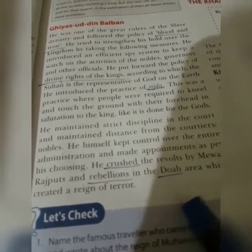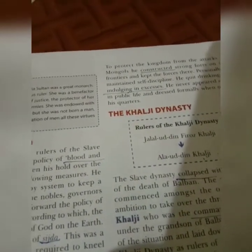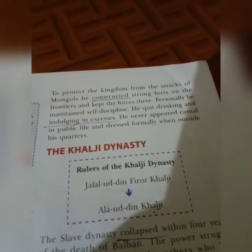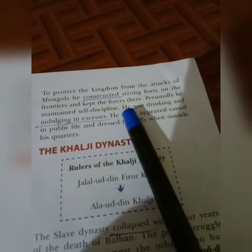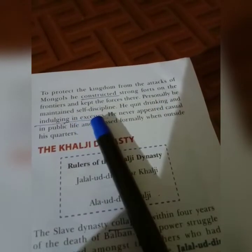To protect the kingdom from Mongol attacks, which were frequent, he constructed strong forts on the frontier — the border area — and kept his forces stationed there. He was also a self-disciplined person; he maintained self-discipline, gave up drinking, and never indulged in excess — never doing things not allowed in society.